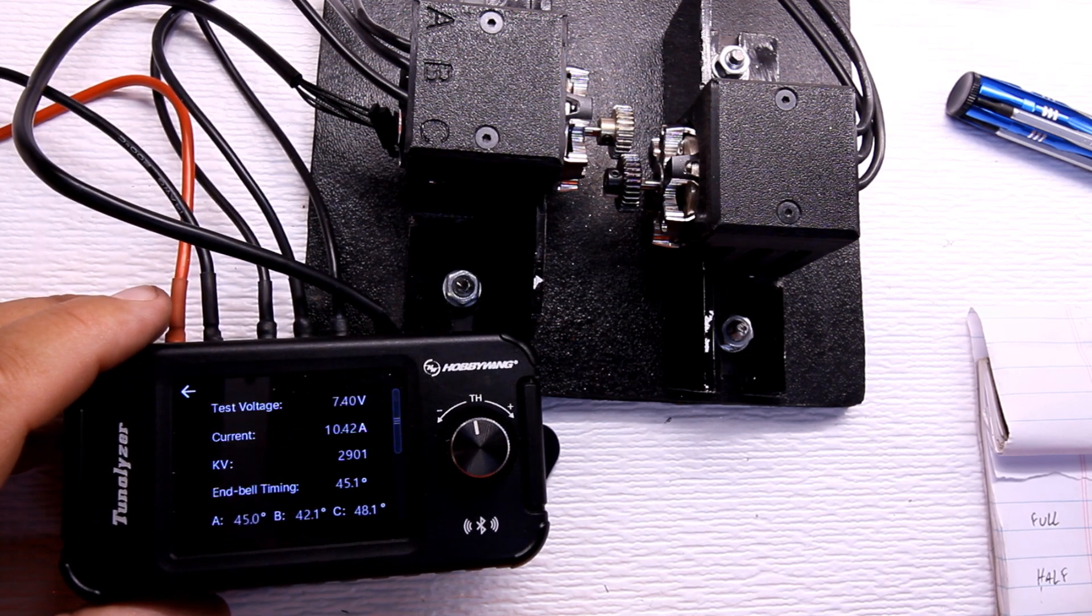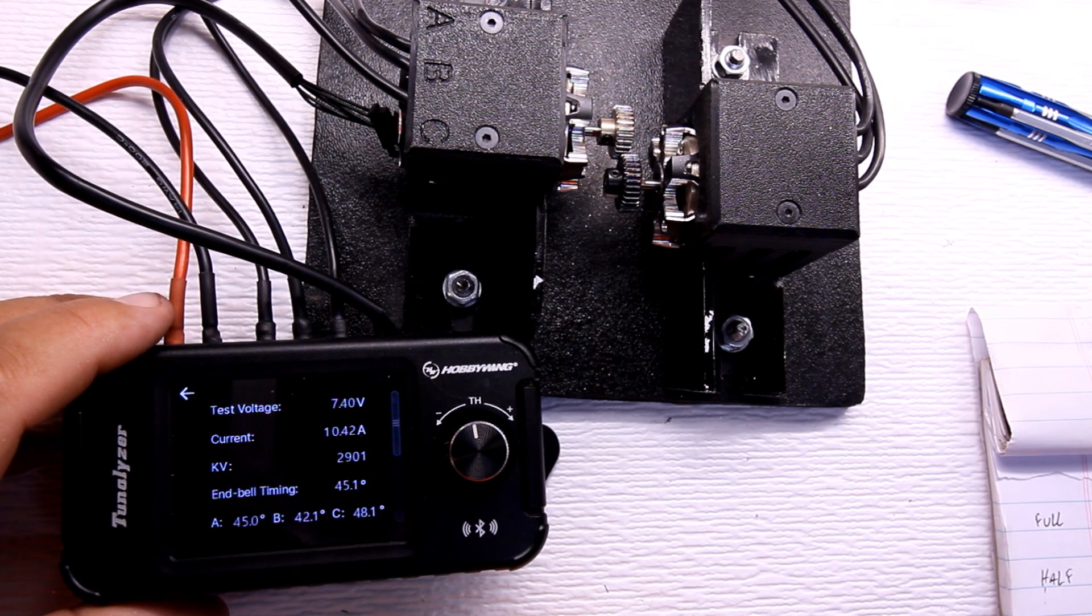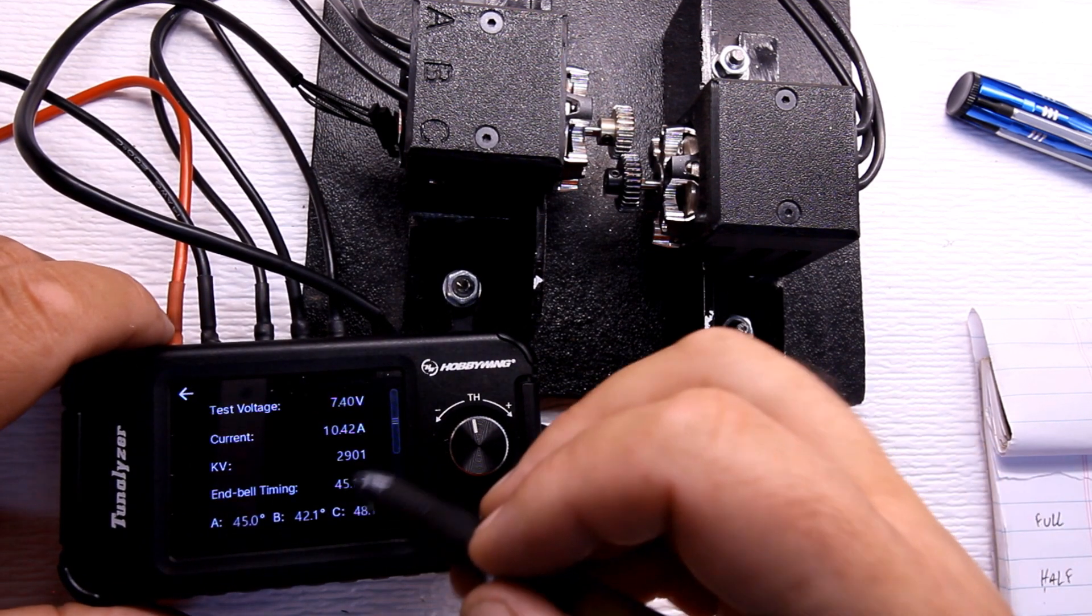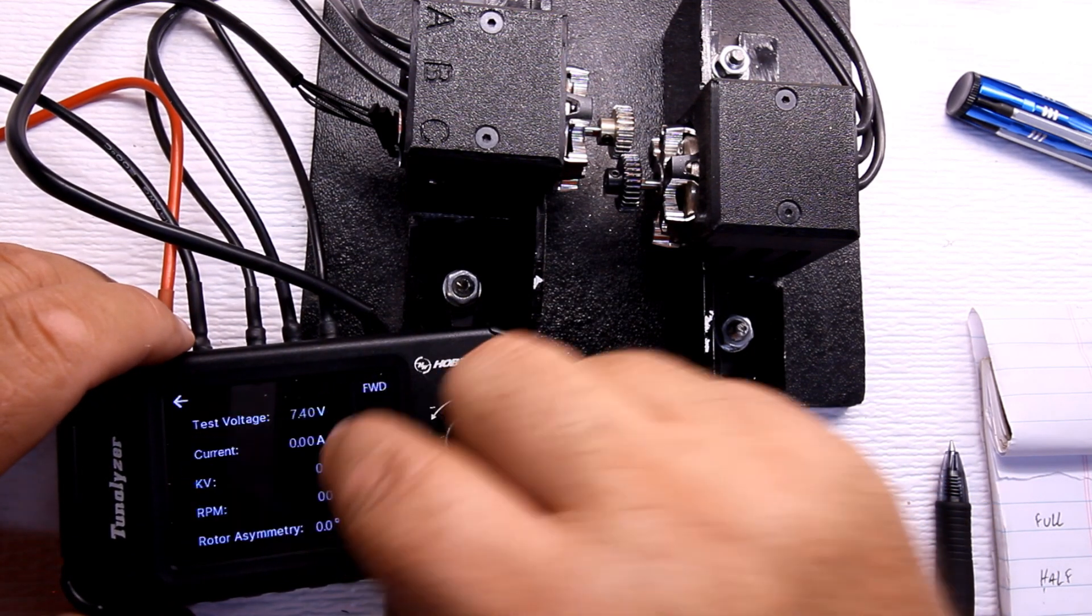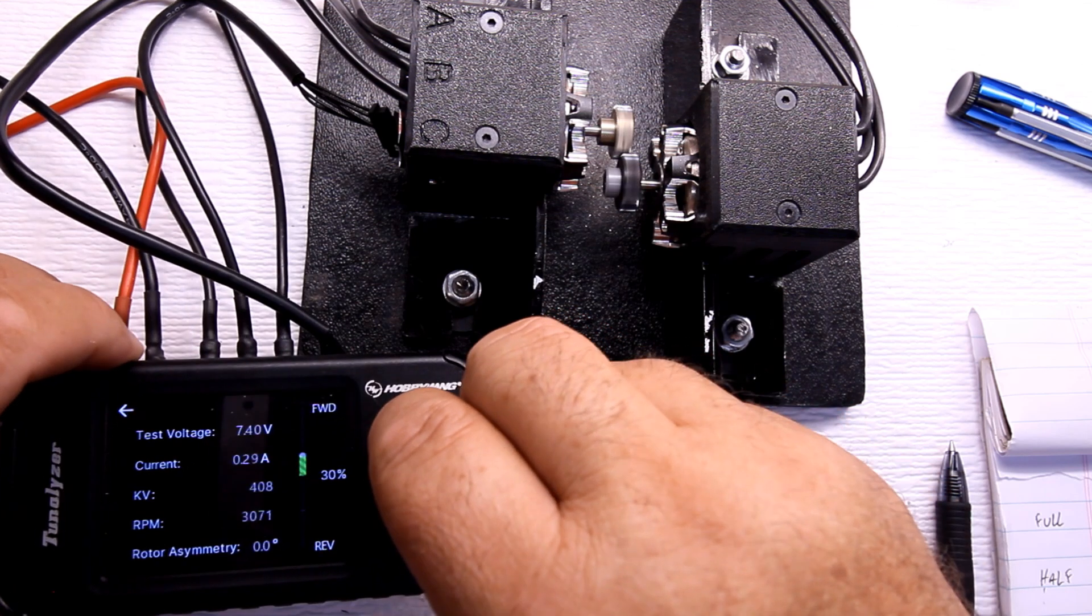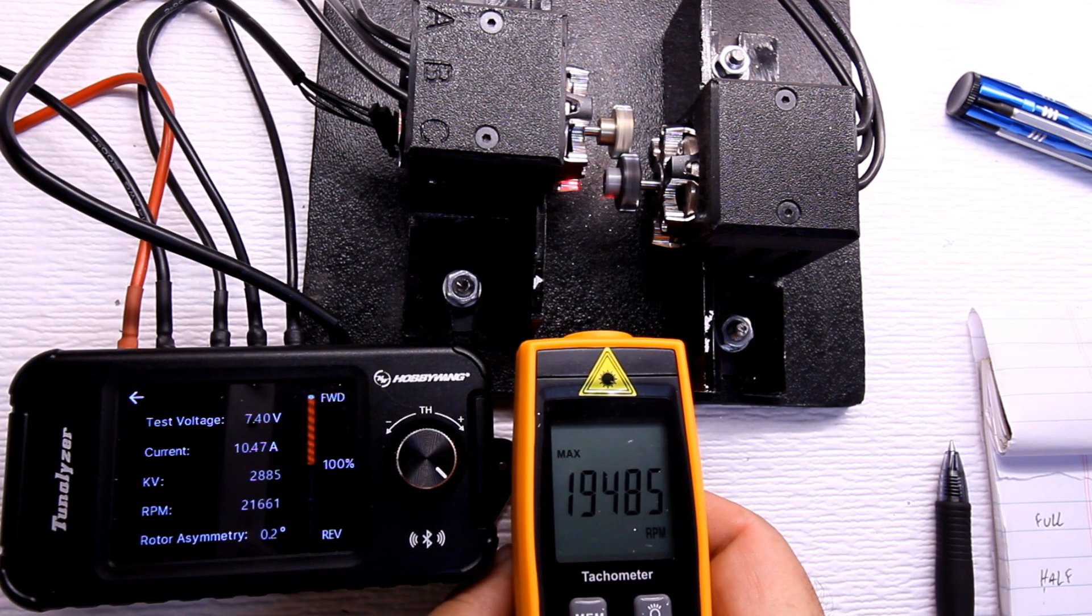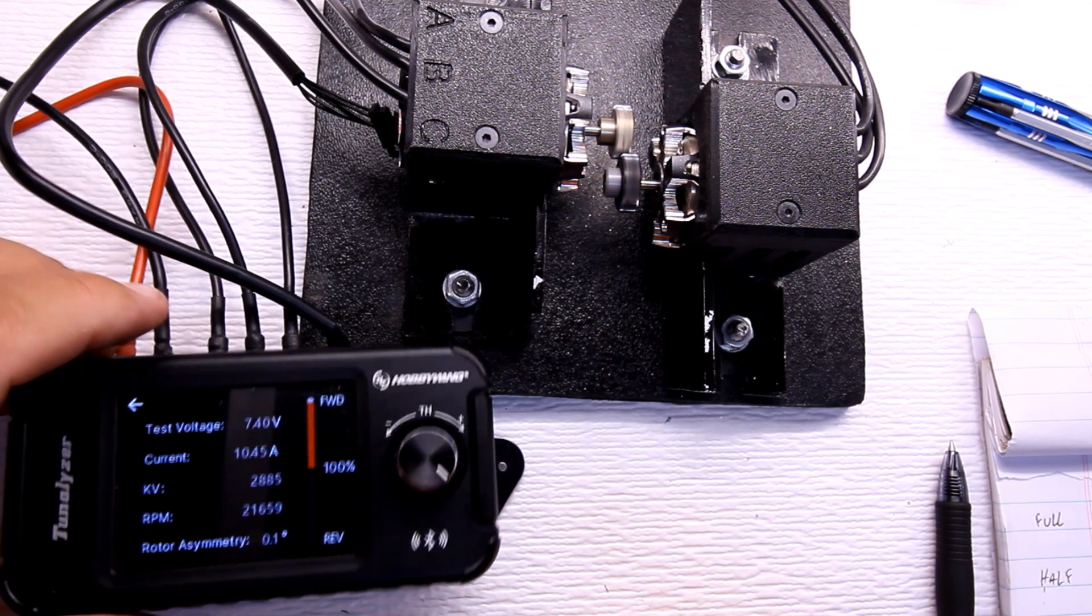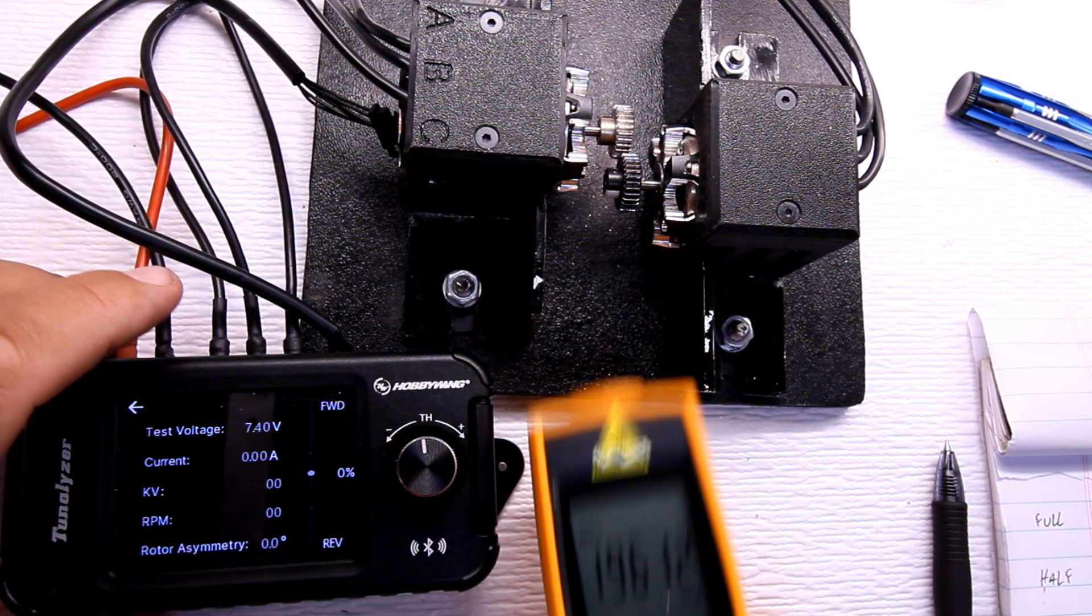Okay, 10.42 amps, 29.01 kV, and so you know it is 7.4V if you guys are doing the math on all this. Let's go ahead and do the RPM. I don't know if you guys see that, it's 19,612.